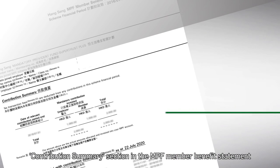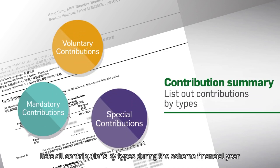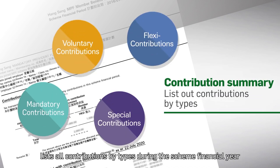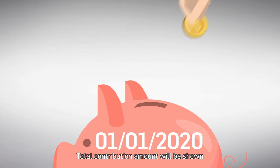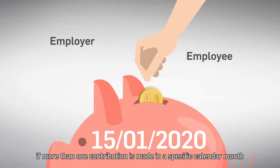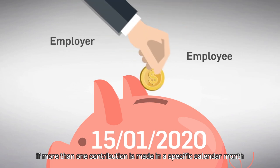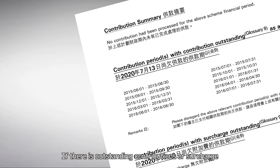The Contribution Summary section in the MPF Member Benefit Statement lists all contributions by types during the Scheme Financial Year. Each transaction record for each calendar month is also shown clearly. The Total Contribution Amount will be shown if more than one contribution is made in a specific calendar month.